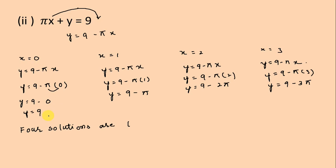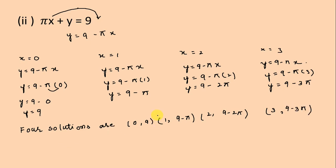So the 4 solutions are (0, 9), (1, 9−π), (2, 9−2π), and (3, 9−3π). These are the 4 solutions of this equation. Let's move to the next part.